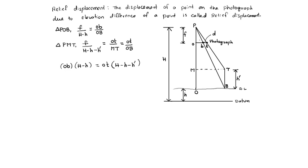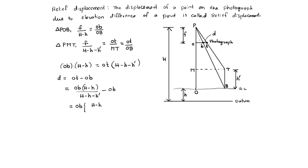Now we need to find relief displacement D. D equals OT minus OB. OT equals OB into (H minus h) divided by (H minus h minus H-dash), minus OB. Taking OB as common: OB into [(H minus h) divided by (H minus h minus H-dash) minus 1].